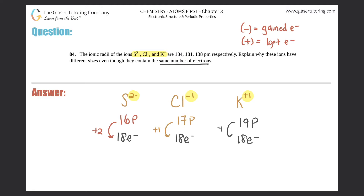S²⁻ has a radius of 184 pm, Cl⁻ is 181 pm, and K⁺ is 138 pm. The reason these ions have different sizes all comes down to effective nuclear charge — the charge of the nucleus.